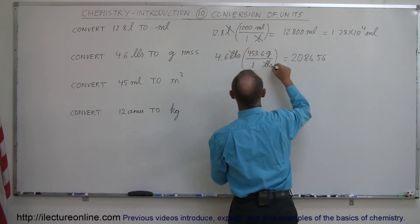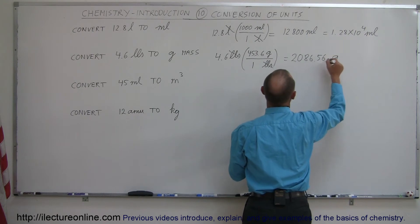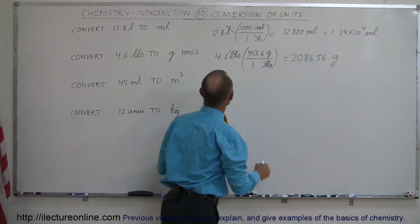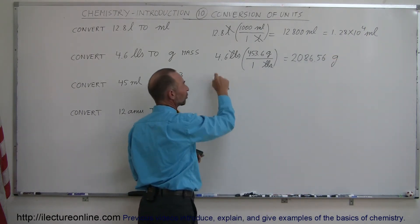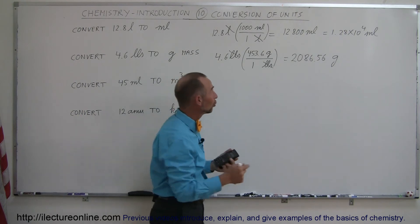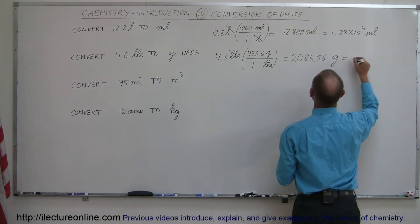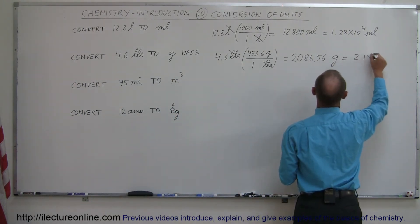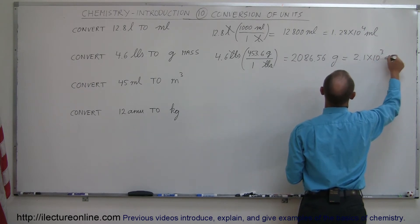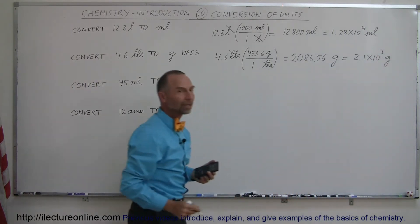Pounds cancels out, we're left with grams. But that's way too many significant figures. We only start out with two significant figures, so we should have an answer with just two significant figures. So this would be equal to 2.1 times 10 to the third grams, appropriately converted.